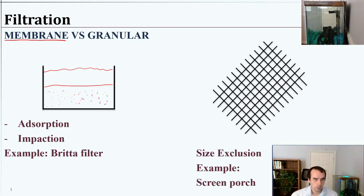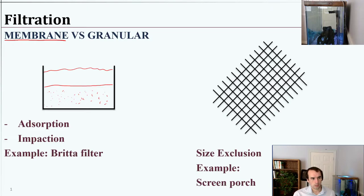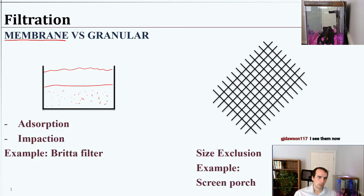Membrane filtration, as opposed to granular filtration — which is like that groundwater system where particles are removed by sticking to things — is doing straight-up size exclusion. If we think about a coffee filter, the coffee filter is physically preventing the coffee grains from going through it.